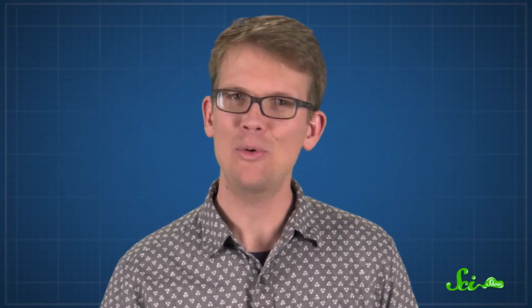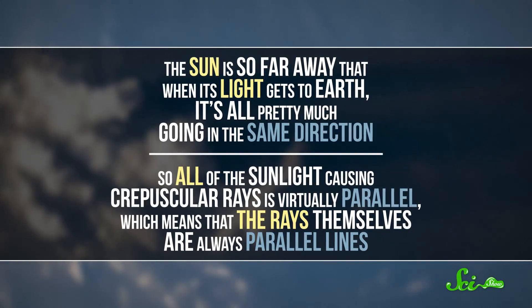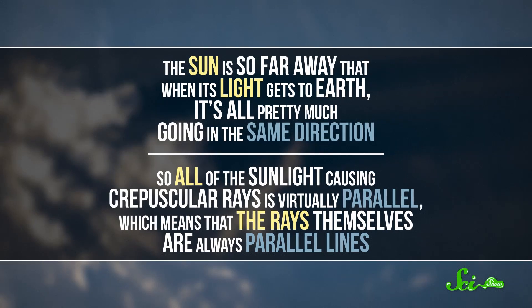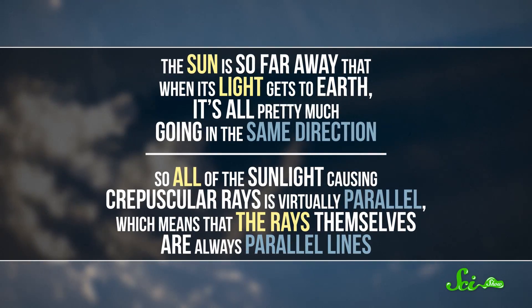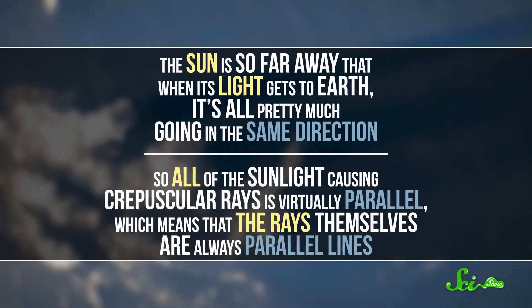So what's actually happening here? Are the rays parallel, or do they spread out from the sun? Well, both. The sun is so far away that when its light gets to Earth, it's all pretty much going in the same direction. So all of the sunlight causing crepuscular rays is virtually parallel, which means that the rays themselves are always parallel lines. They just look like they're meeting at the sun because of perspective, which makes things look smaller when they're farther away.